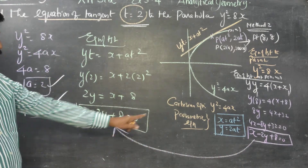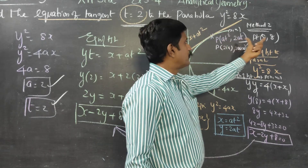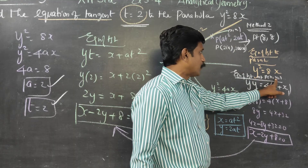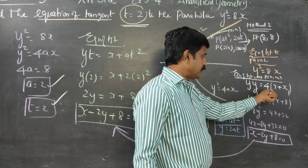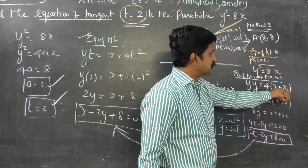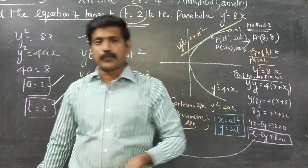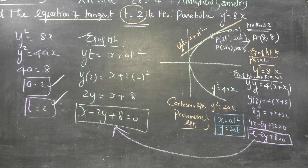The equation of the tangent is x minus 2y plus 8 equal to 0. In Method 2, you first find the parametric point (x1, y1), then use the ready-made equation of tangent to the parabola at that point. Either method — direct parametric formula yt equal to x plus at square, or finding the point and substituting — gives the same result.